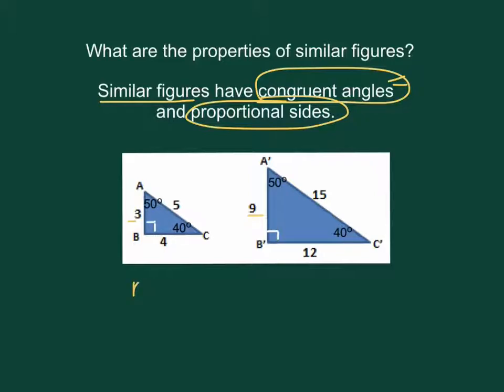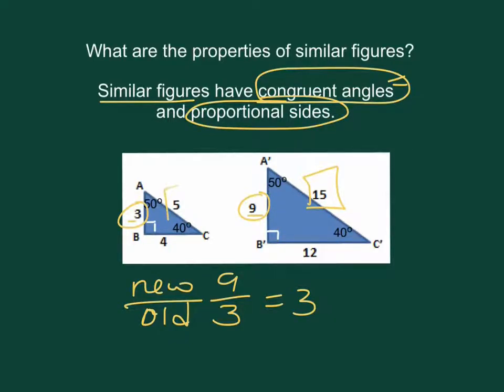So let's look at your new over old and see if it works for each set of sides. So 9 compared to 3, remember the new goes on the top, reduces to 3. Now let's look at 15 and 5. 15 over 5 also reduces to 3.